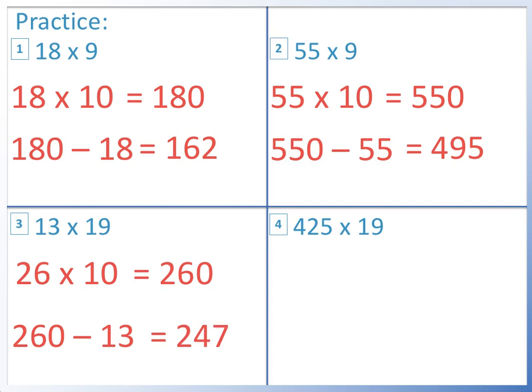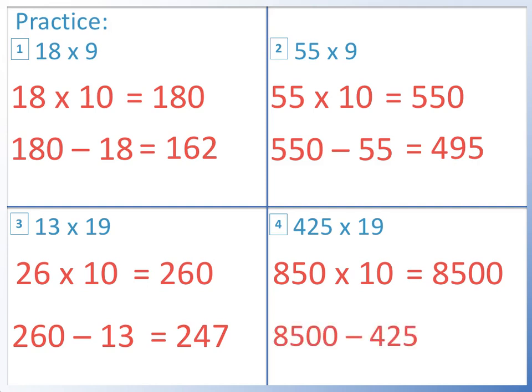Question 4: 425 times 19. First we find 425 times 20, so 425 times 2 equals 850. 850 times 10 equals 8,500. We want 19 lots of 425, not 20 lots, so we take away 1 lot of 425. 8,500 take away 425 equals 8,075.